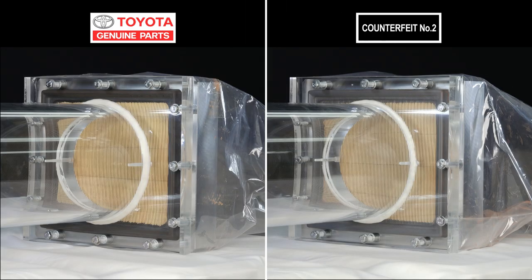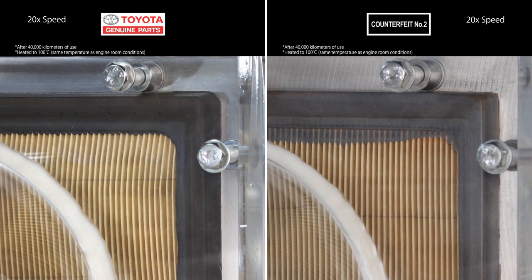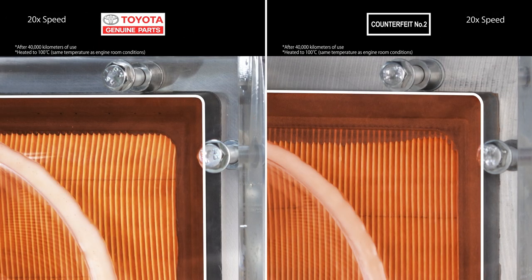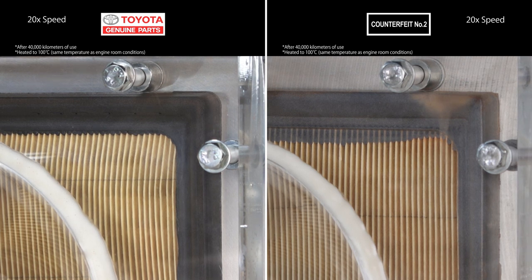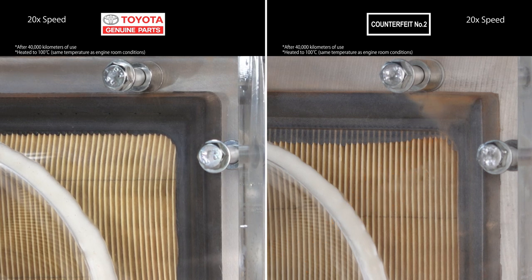Now let's compare the genuine filter to the counterfeit filter. When the orange dust crosses this border, it means dust is getting into the engine. Look at this area on the counterfeit filter. See where the dust is creeping in? It keeps coming in because air is flowing through the gap in the seal.